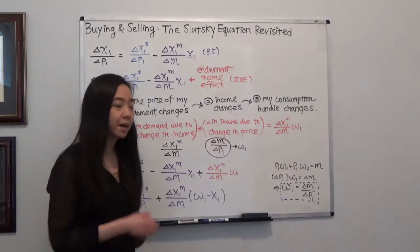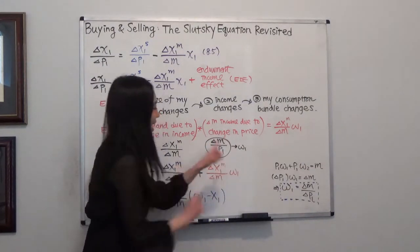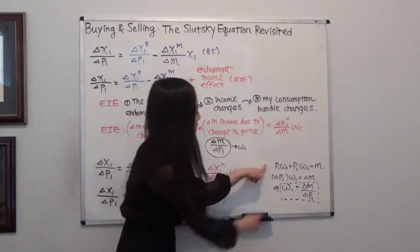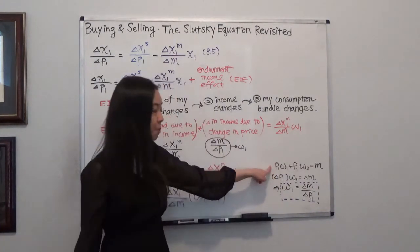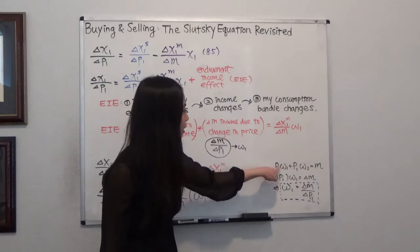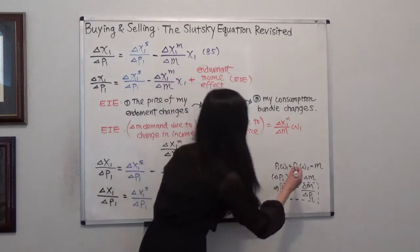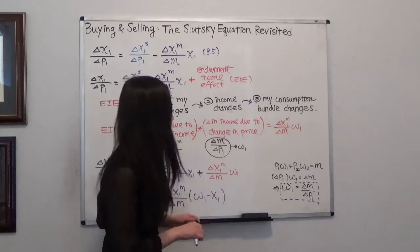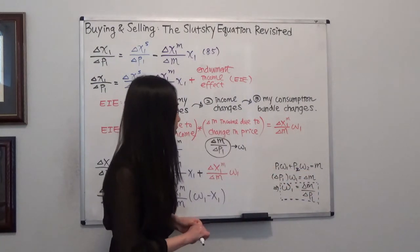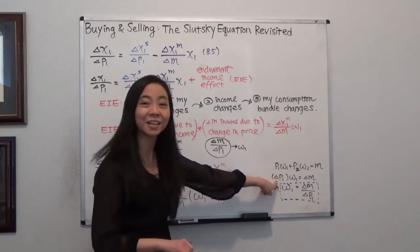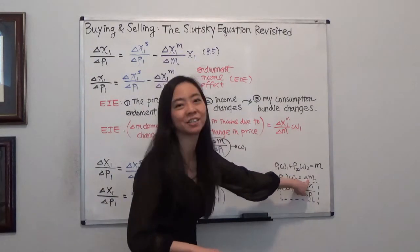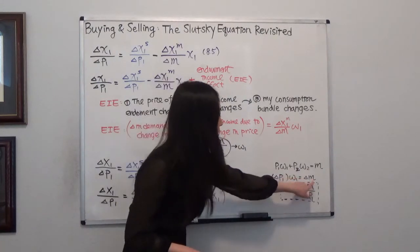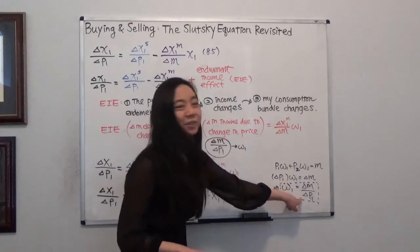But at the same time, I also know that this term is actually equal to omega 1. So how do I know this? Well, look at our initial endowment value. So we know that p1 omega 1 plus p2 omega 2 is equal to my income. And now I know the price of good 1 has changed, and therefore my income has changed. So I know that omega 1 is equal to delta m divided by delta p1.